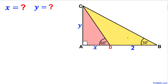Welcome to PreMath. In this video tutorial we have triangle ABC such that angle B is 30 degrees. We have line segment CD that makes an angle of 60 degrees, BD length is 2, AD length is X, and AC length is Y. We are going to calculate the values of X and Y using trigonometry.